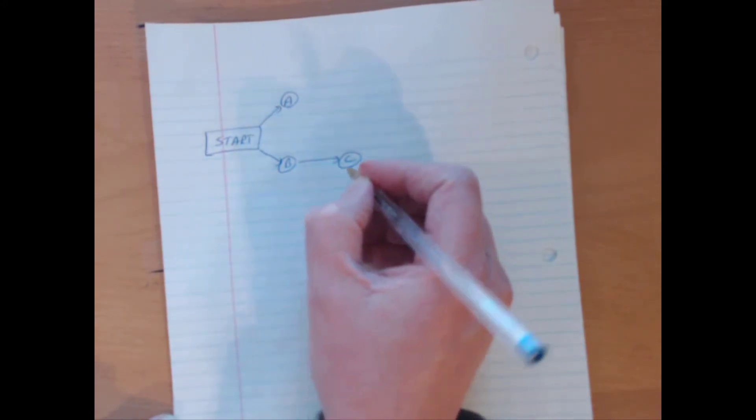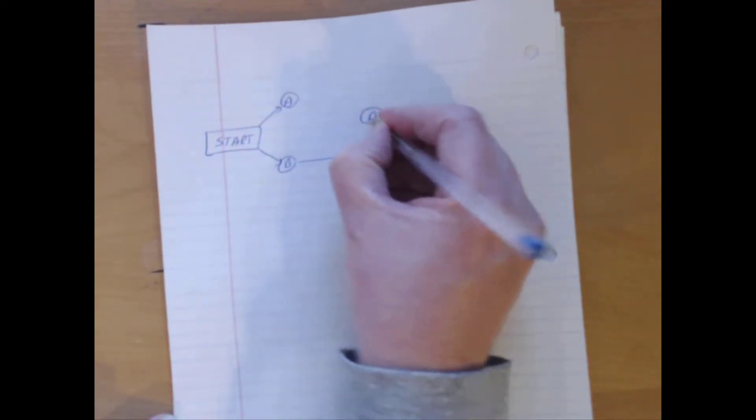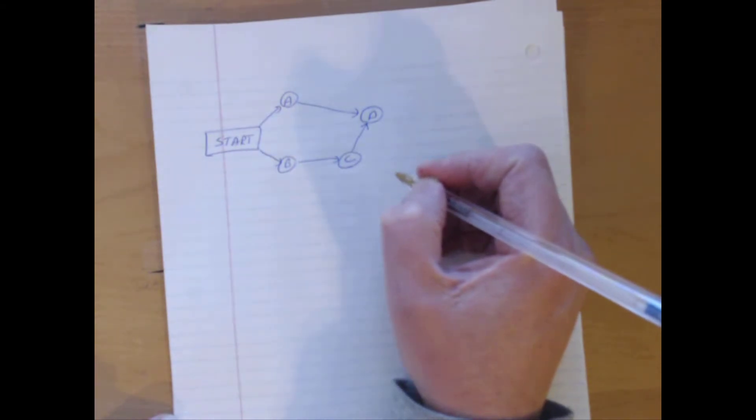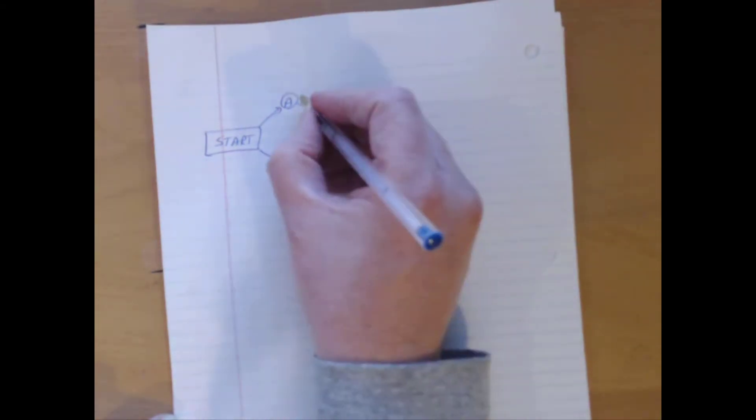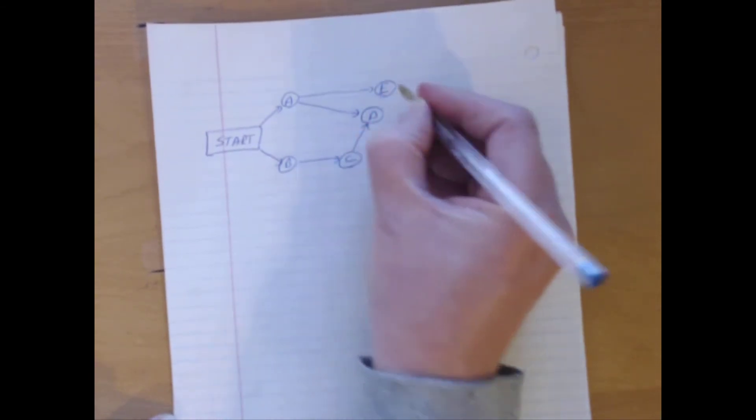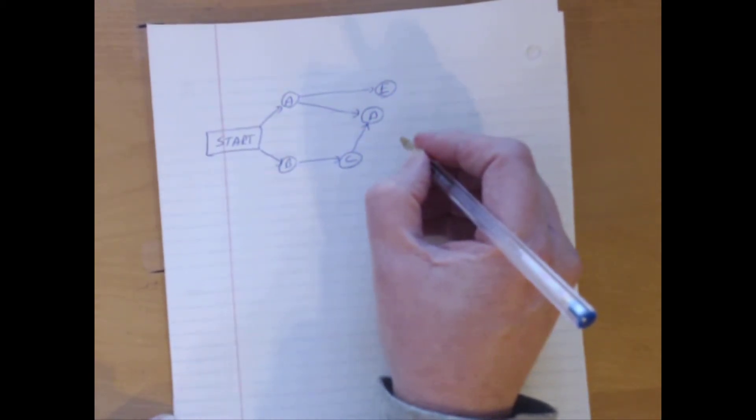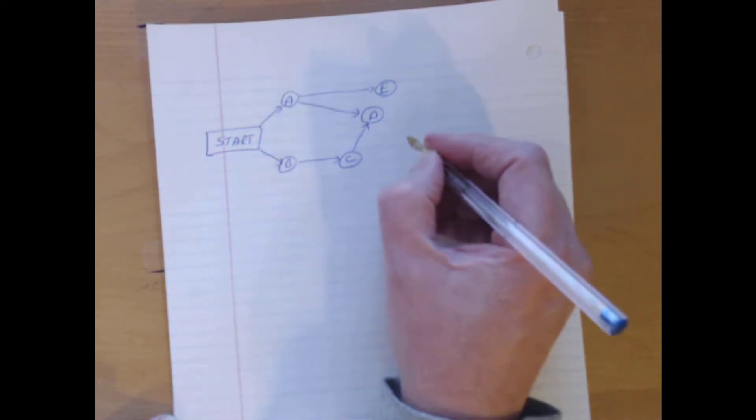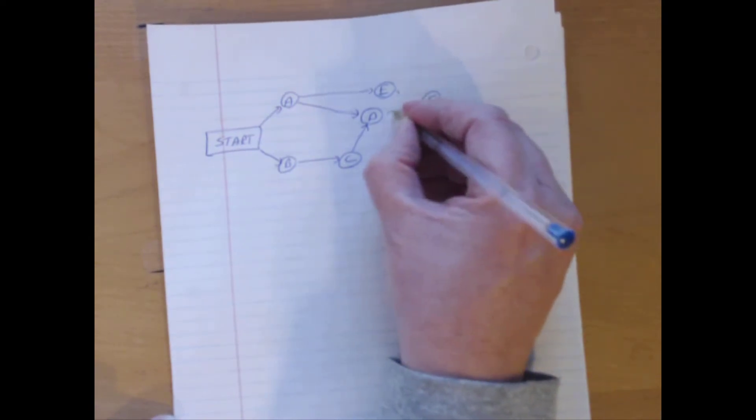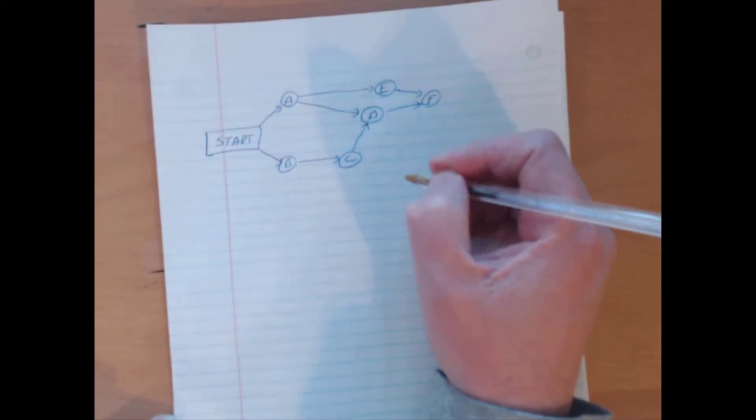D requires A and C. Let's put someone in the middle there. C needs to be done and A needs to be done. Then D may begin. E depends just on A. Let's go straight to there. E just depends on A. And then lastly I see F depends on D and E. F depends on D and depends on E.